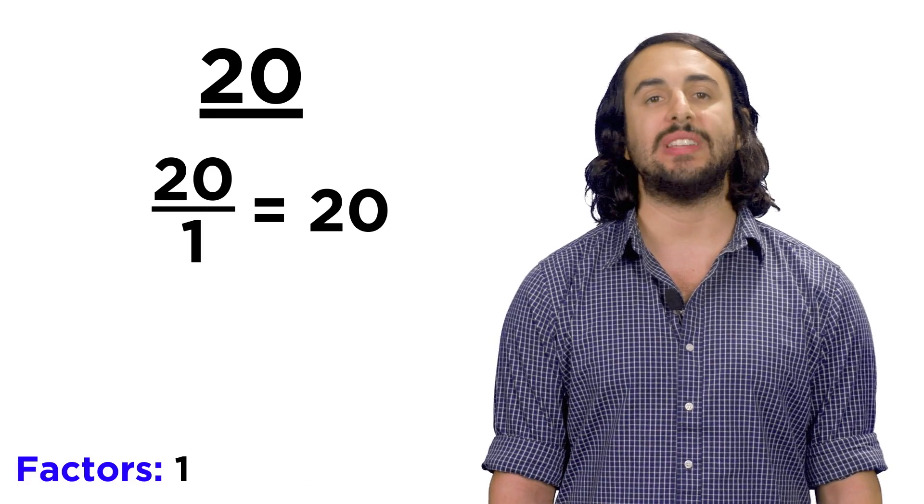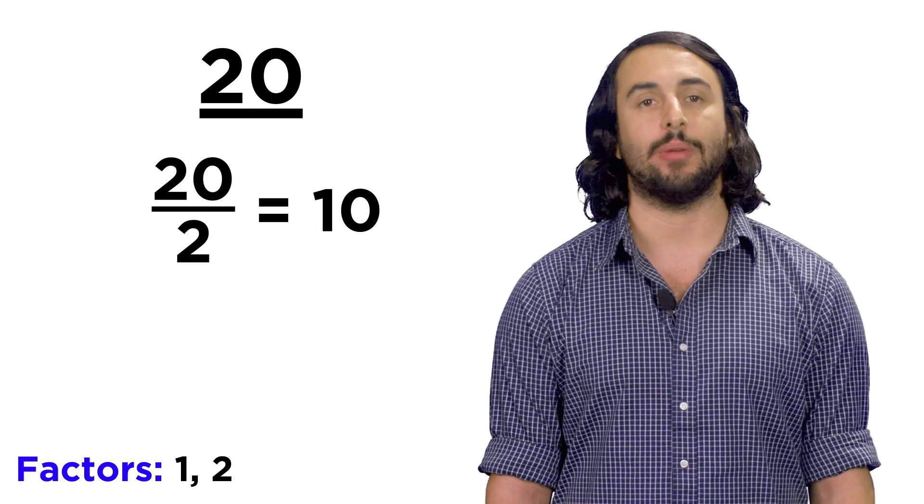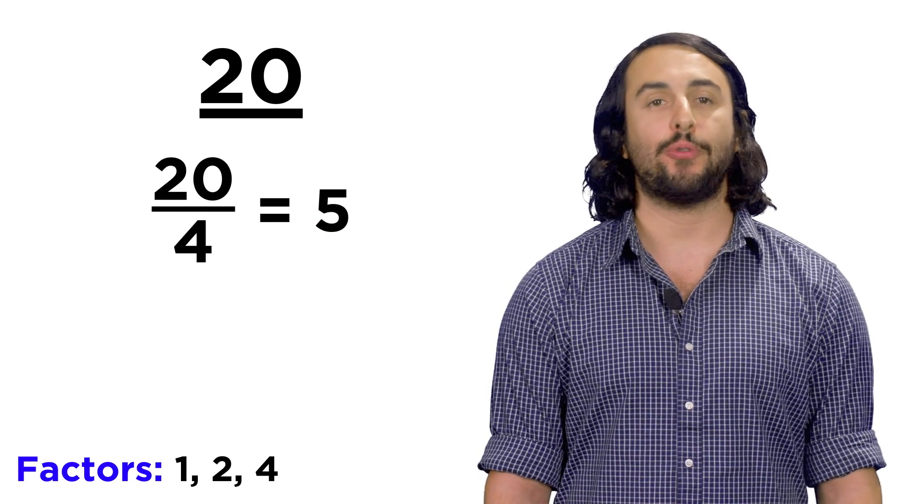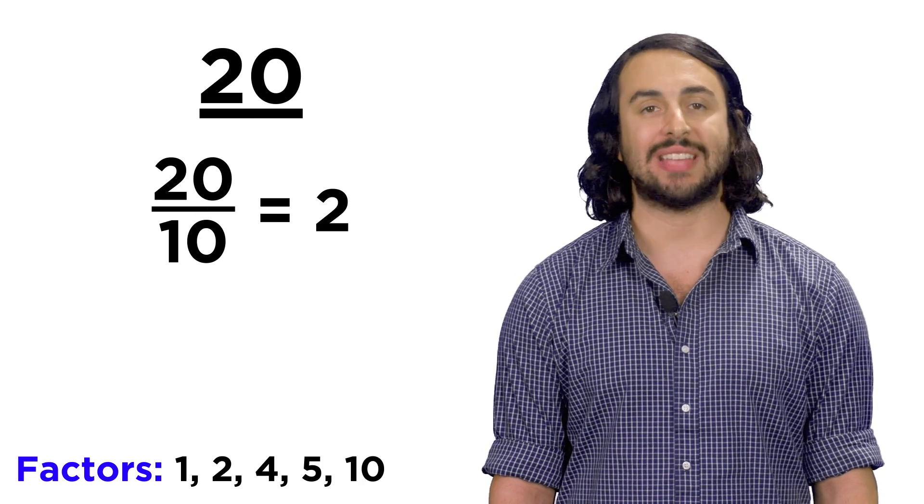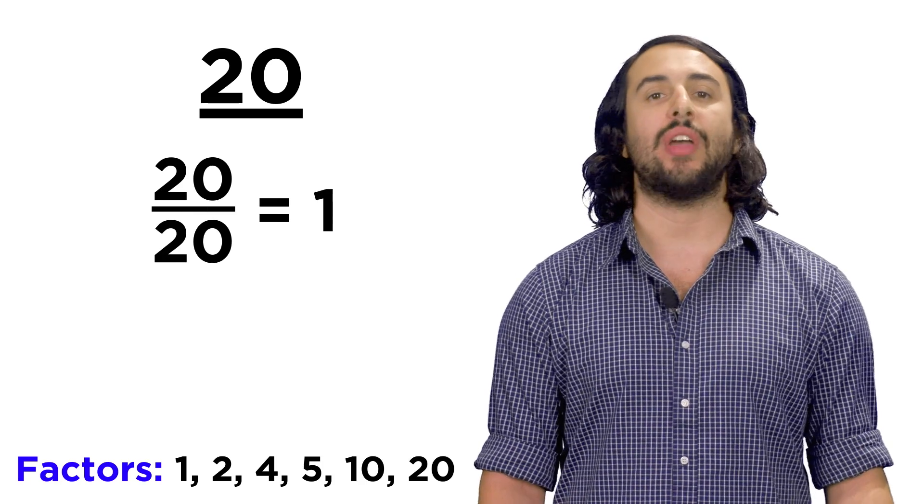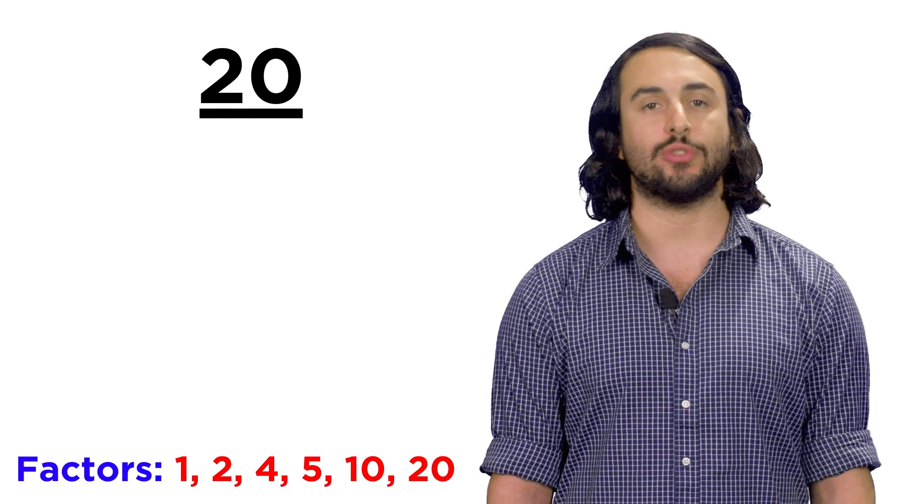How about twenty? For twenty, we see that one works, as always, two as well, because it's an even number. Three does not, but four does, as well as five. Then we jump all the way to ten, since it's half of twenty. Then twenty itself, and that's the end. Those are the factors of twenty.